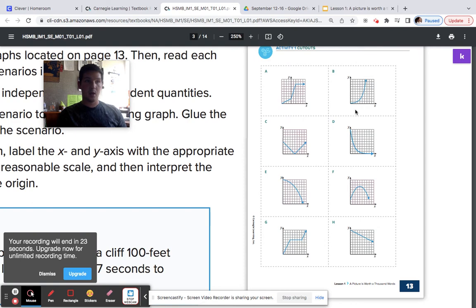X would be our time in weeks. So how much time is going to be passing? Y would be our dependent variable, the interest rate, in dollars.